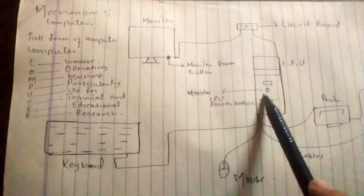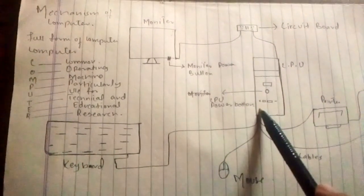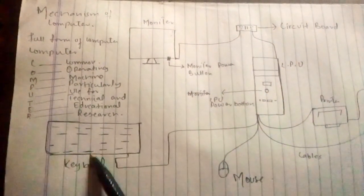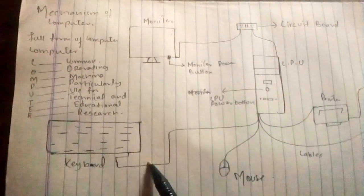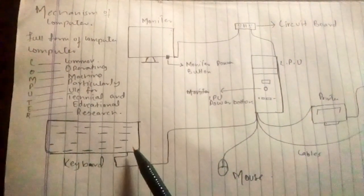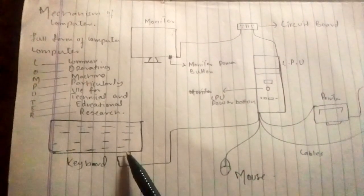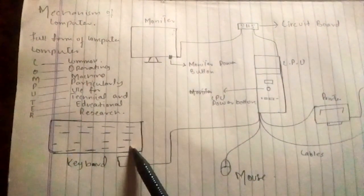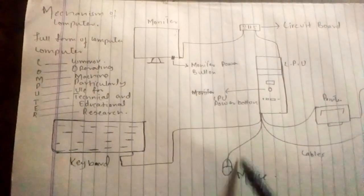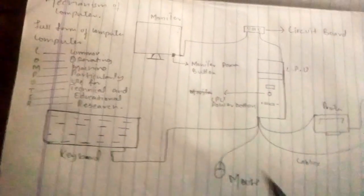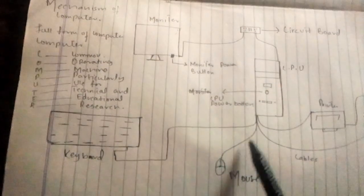When we start or turn on the computer, first we press the power button of the CPU. As we know, our keyboard is connected to the CPU — the cable that connects the CPU to the keyboard. We can also say that the mouse is also connected to the CPU. One cable is connected from the switch to the CPU, and other cables such as keyboard and mouse are connected to the CPU.